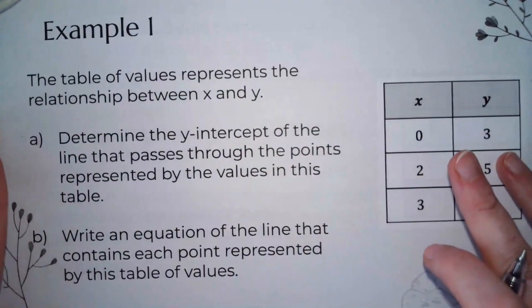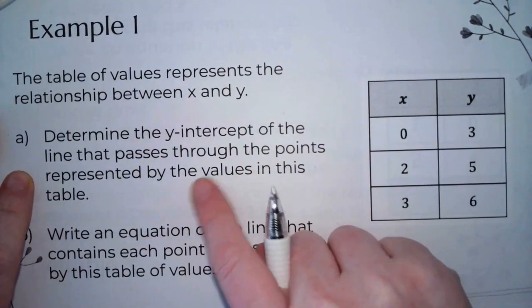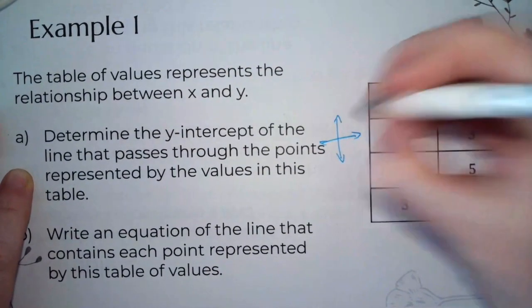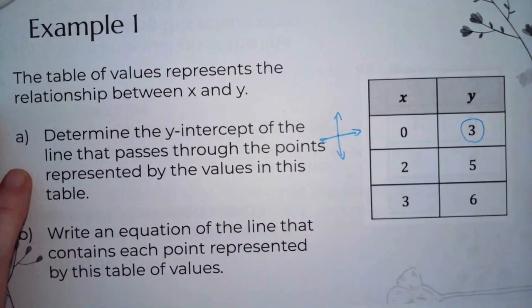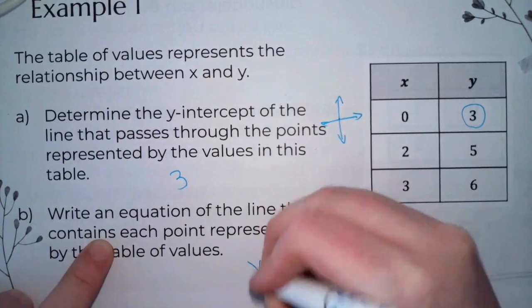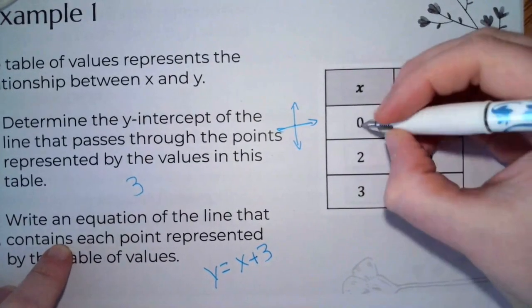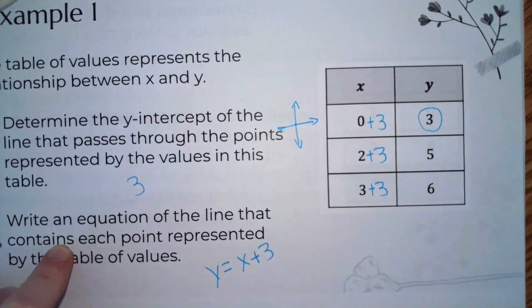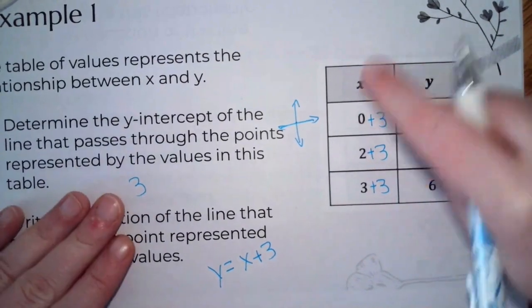Let's look at this table. It represents the relationship between x and y. Wherever x is 0, that's going to be your y-intercept. So what's my y-intercept? 3. To write an equation, we say y equals x plus 3. Because 0 plus 3 is 3, 2 plus 3 is 5, 3 plus 3 is 6. So x plus 3 gives me my y. These are called function tables.